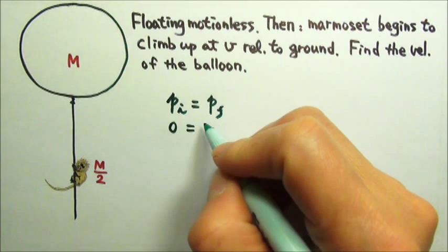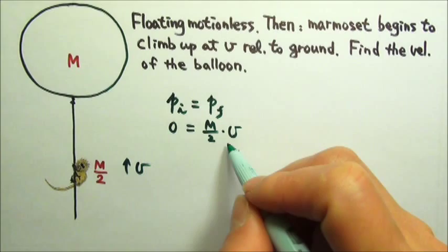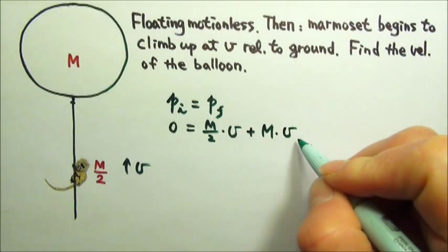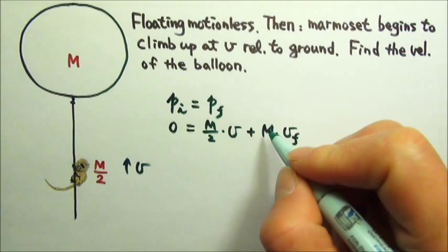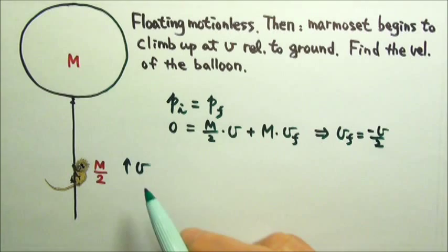The half-m marmoset has a velocity of v, so mass times velocity gives the marmoset's momentum. The balloon may be moving at a velocity we don't know — that's what we're solving for. We can cancel m and solve for vf, getting vf equal to negative half v. This being negative means it's in the opposite direction, so the balloon's velocity goes downward.